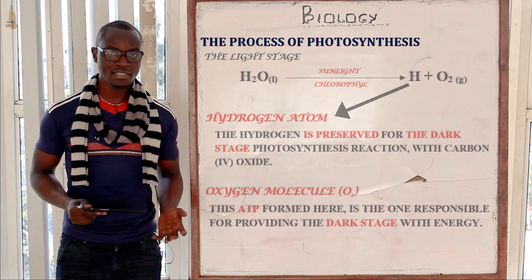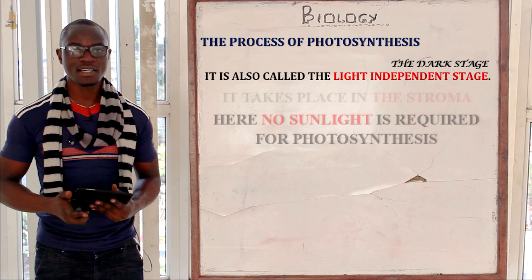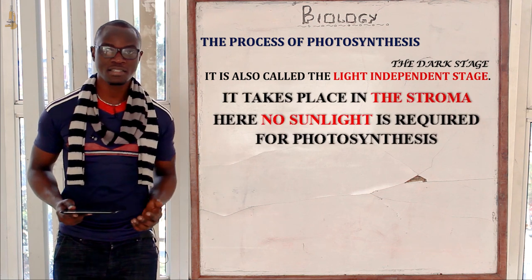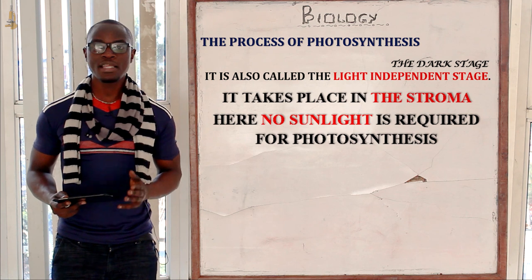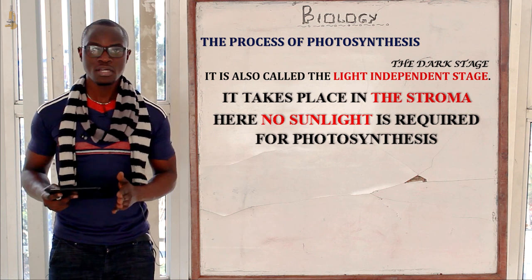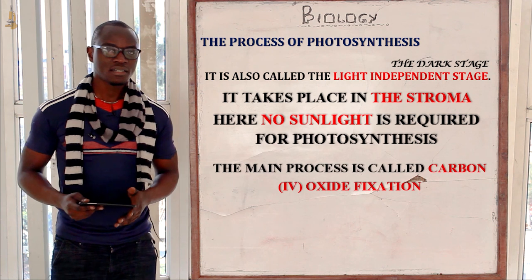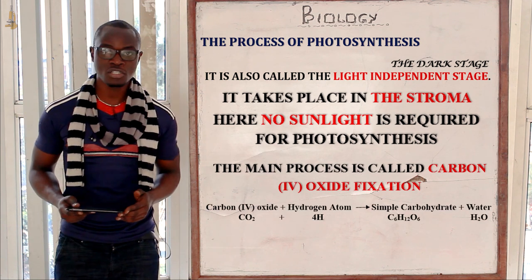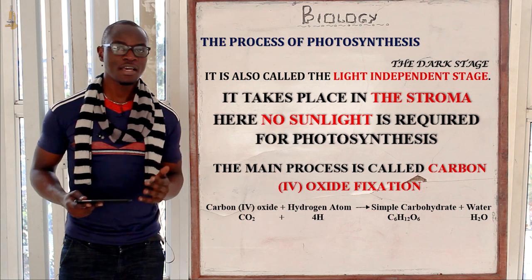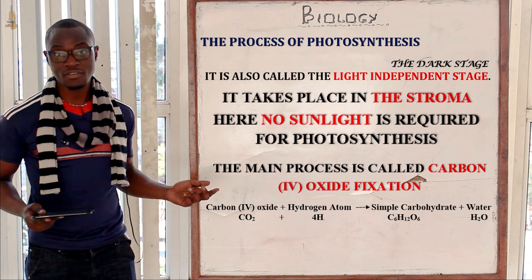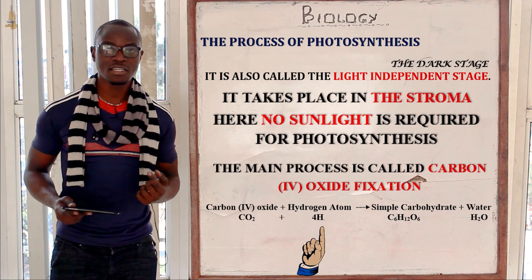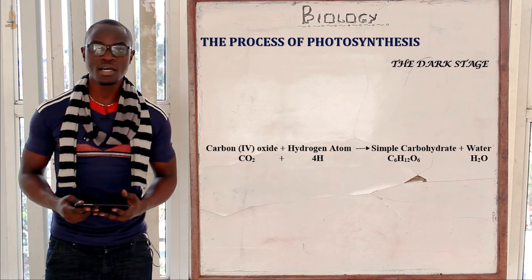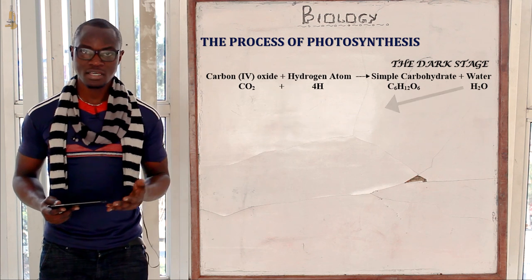Now let's proceed to the dark stage. The dark stage of photosynthesis is also called the light-independent stage. It happens when there is no sunlight. The main process that happens in the light-independent stage is called carbon dioxide fixation. In carbon dioxide fixation, the hydrogen that was preserved in the light stage reacts with carbon dioxide to form simple sugar and water molecules plus energy.